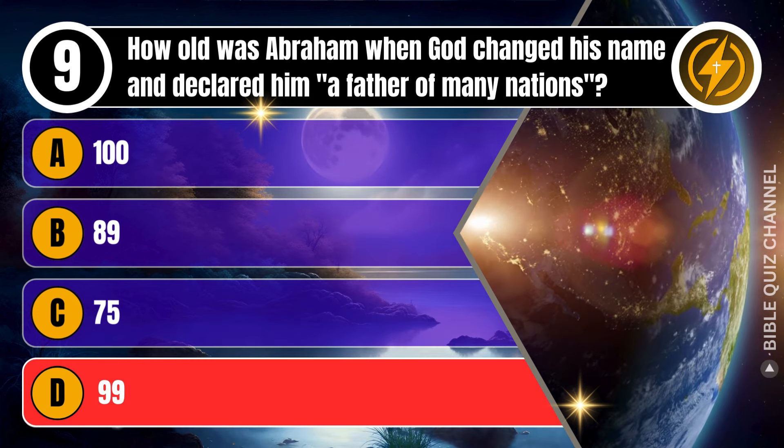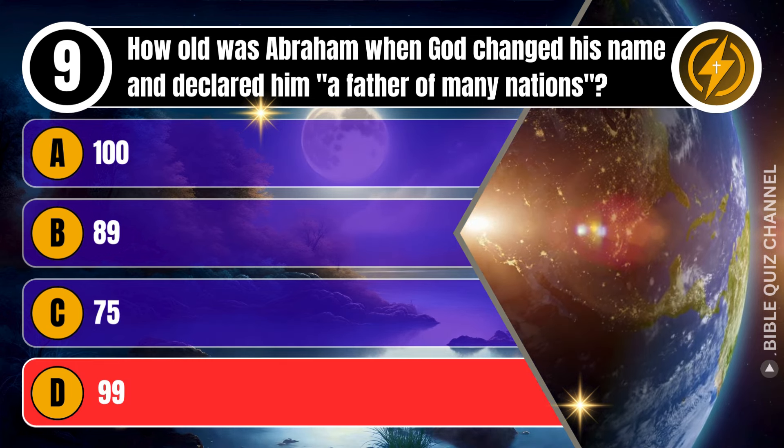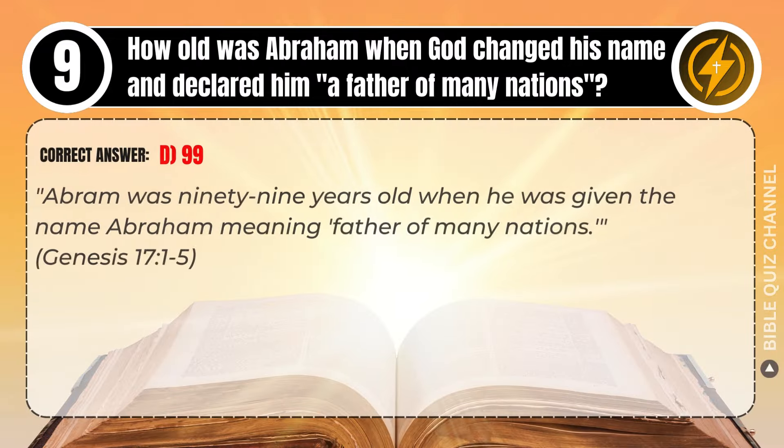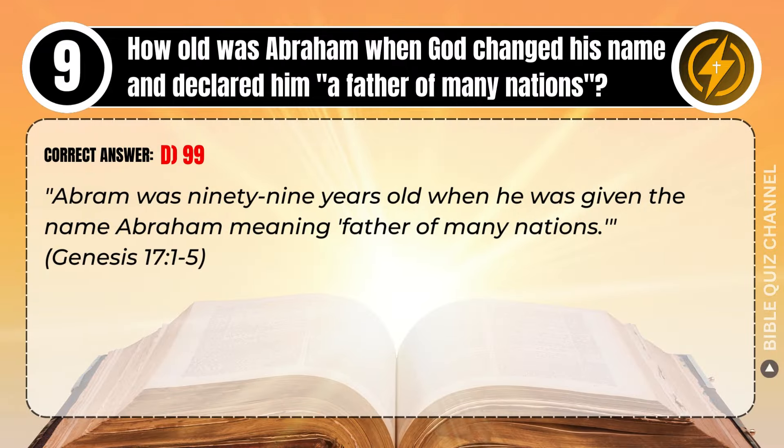Correct answer: D. 99. Explaining the Bible — Abram was 99 years old when he was given the name Abraham, meaning 'father of many nations.' Genesis, chapter 17, verse 1 to 5.